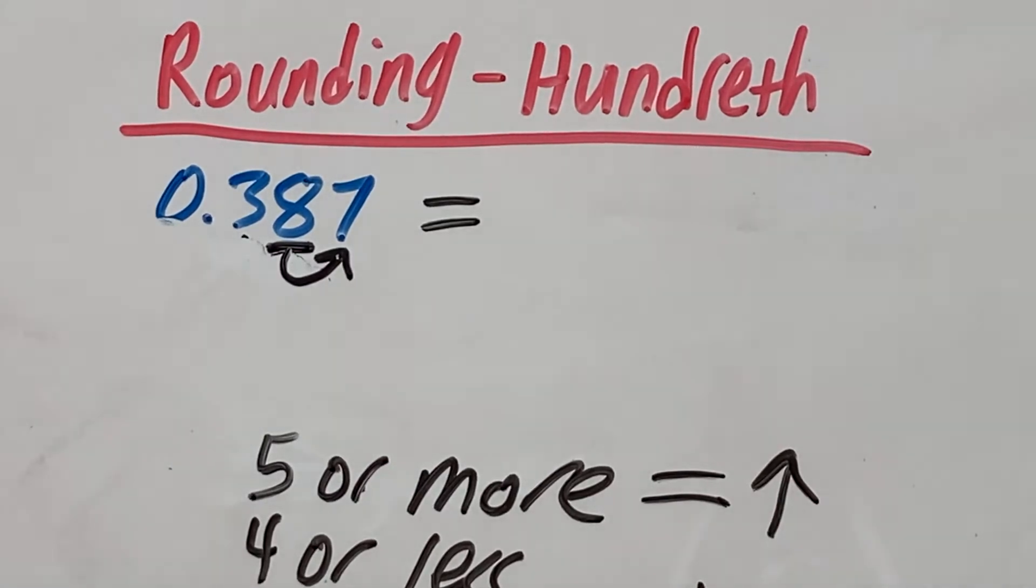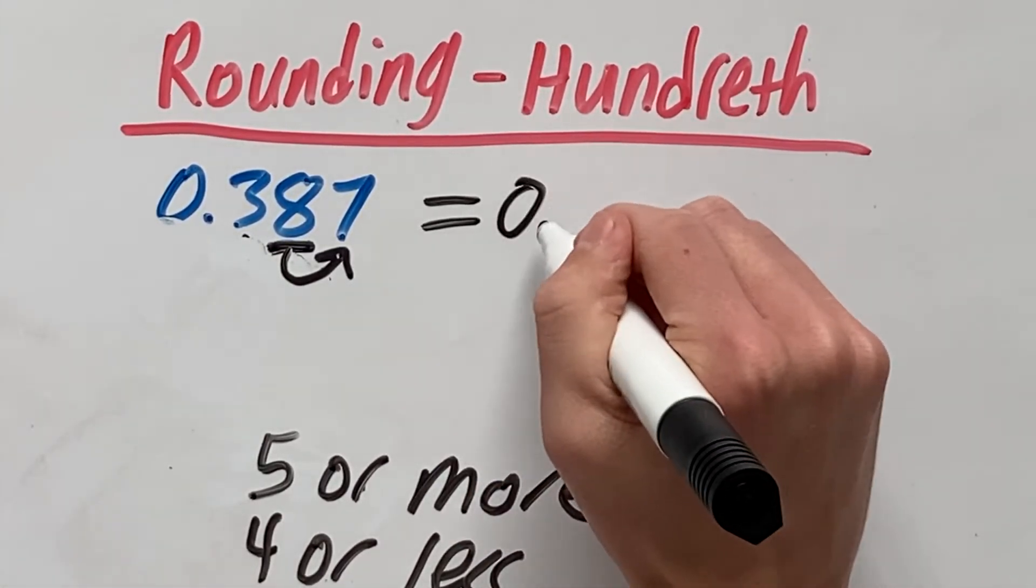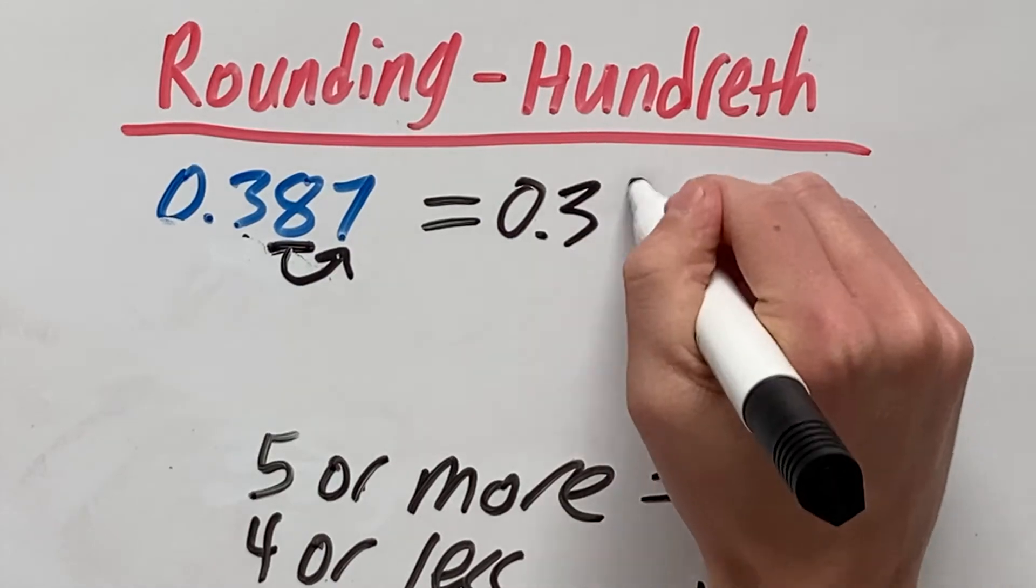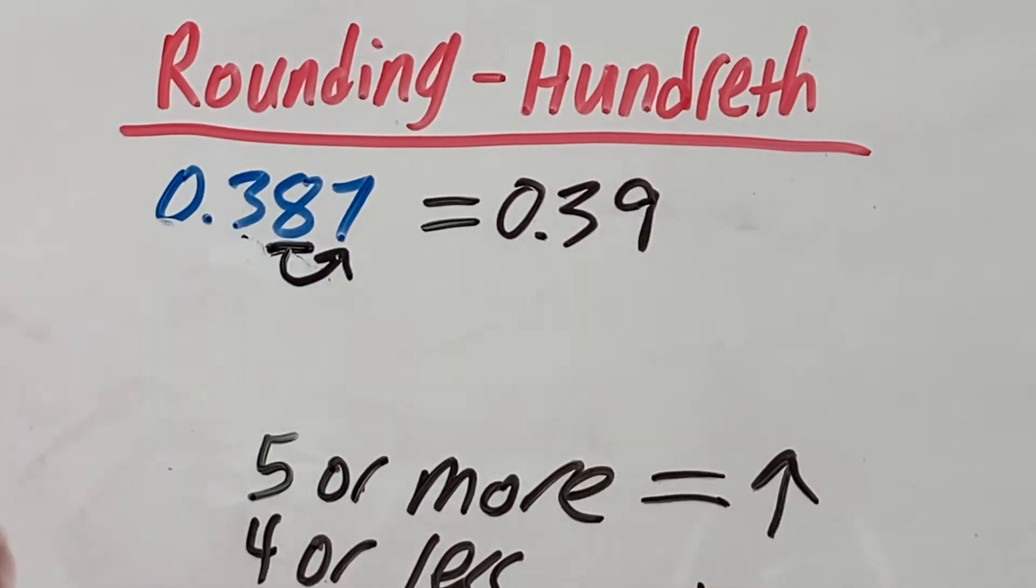Because 7 is above 5, we are going to round the 8 up. So this becomes 0.39, because the 8 is rounded up to the 9.